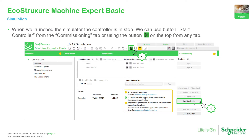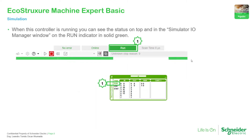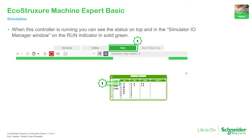In order to activate the commissioning we just need to start the controller, because this virtual PLC, when you launch the simulator, is in Stop and you need to make it Run. We can use the icons on the top to make it run, and here we can see the status of this virtual PLC.